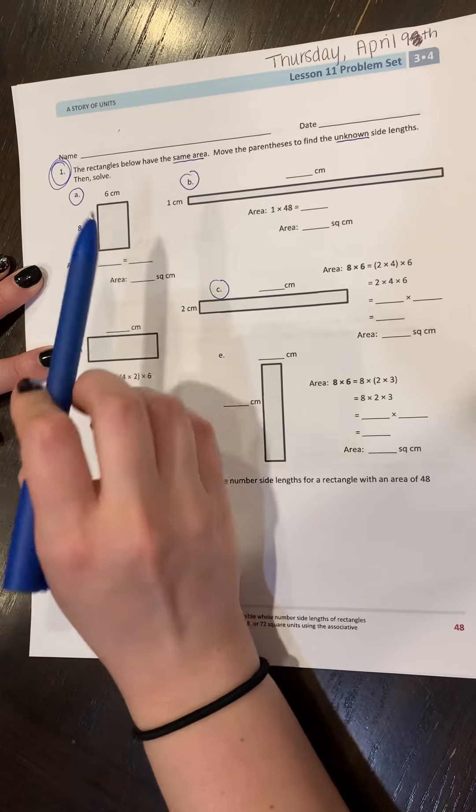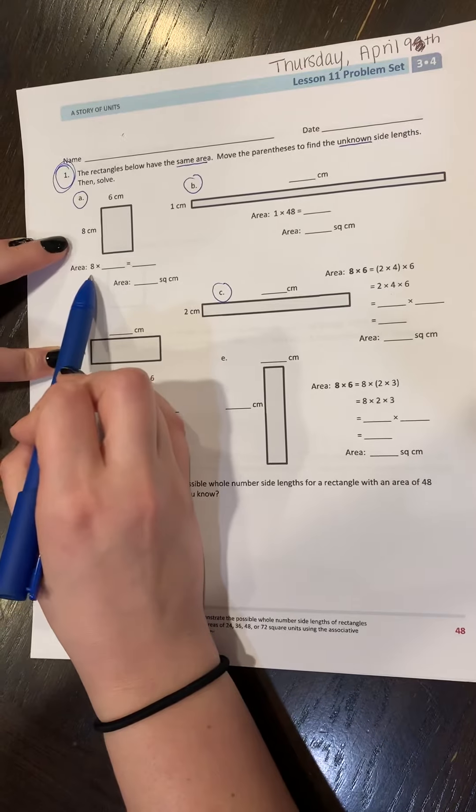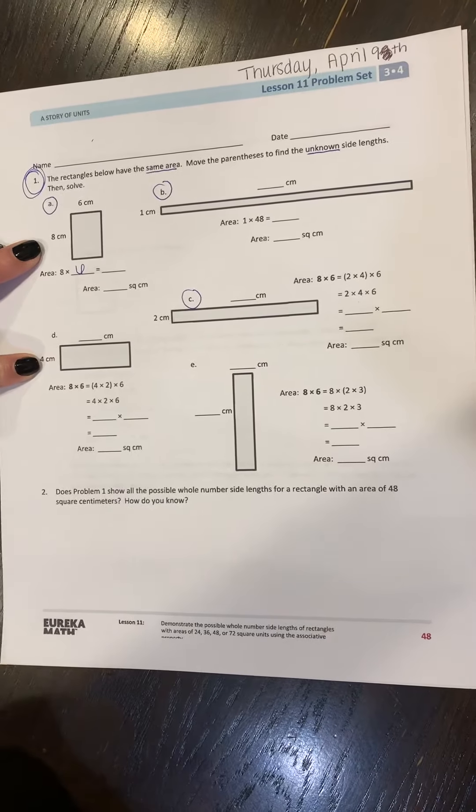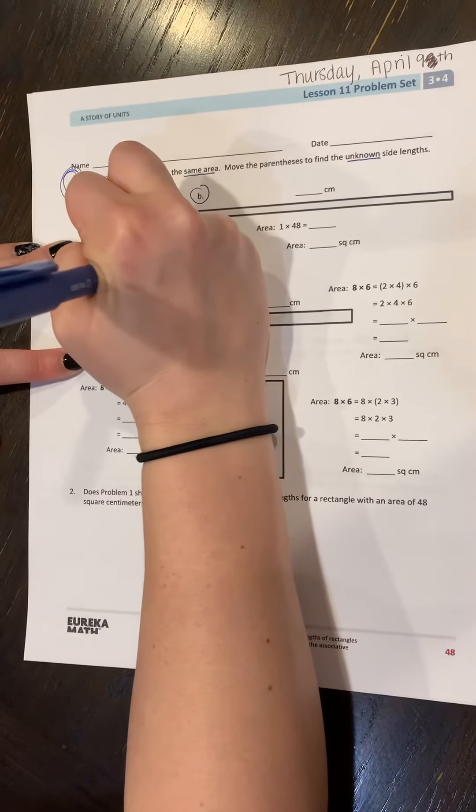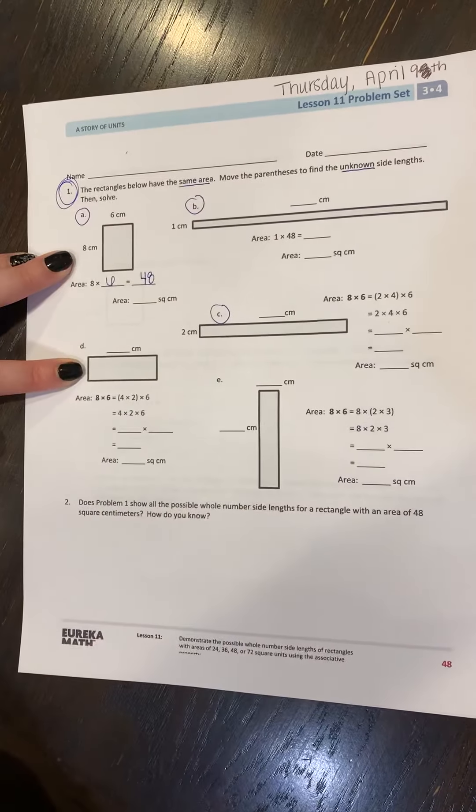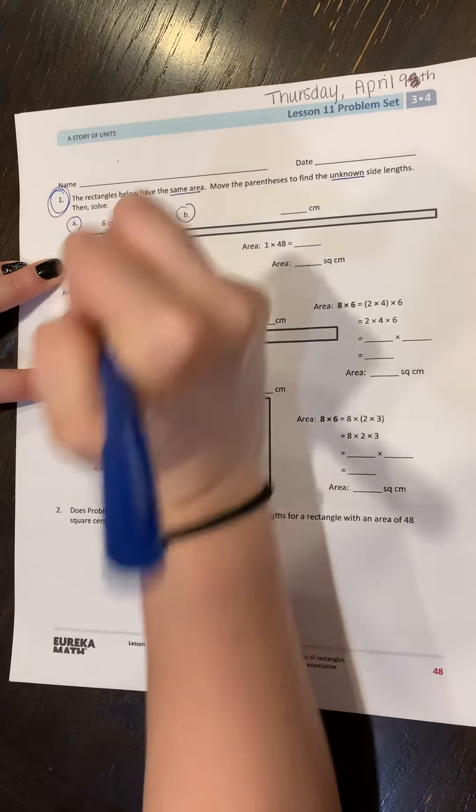we have one side that's eight centimeters and one side that is six centimeters. So when we fill this in and we're finding area, we're doing this side times this side, so we have eight times six. Now this is just calling upon some basic math facts that I know we already know. We know that eight times six is 48. So our area is 48 square centimeters.